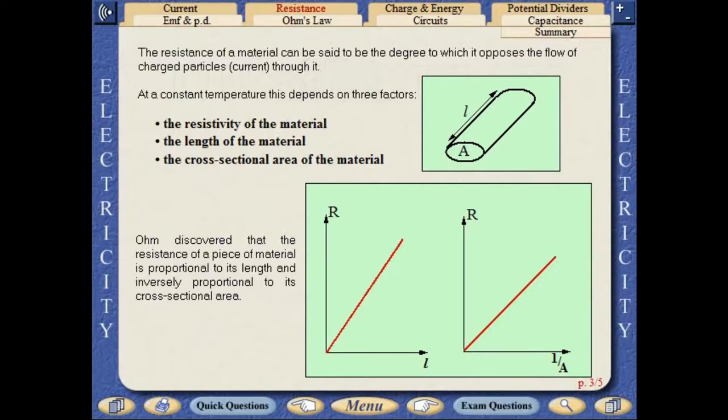Ohm discovered that the resistance of a piece of material is proportional to its length and inversely proportional to its cross-sectional area.